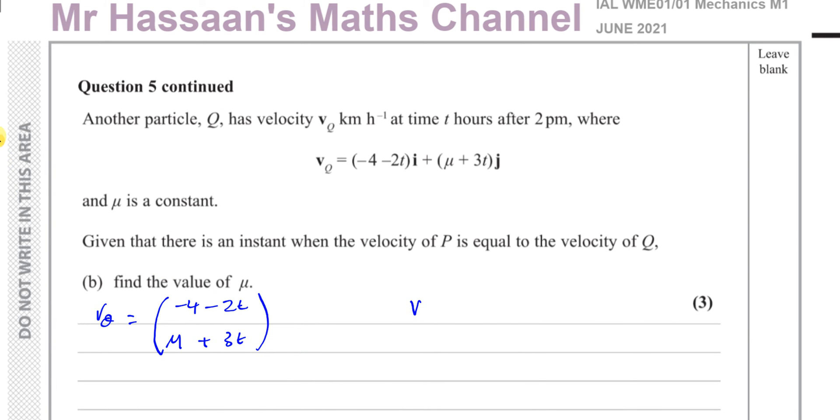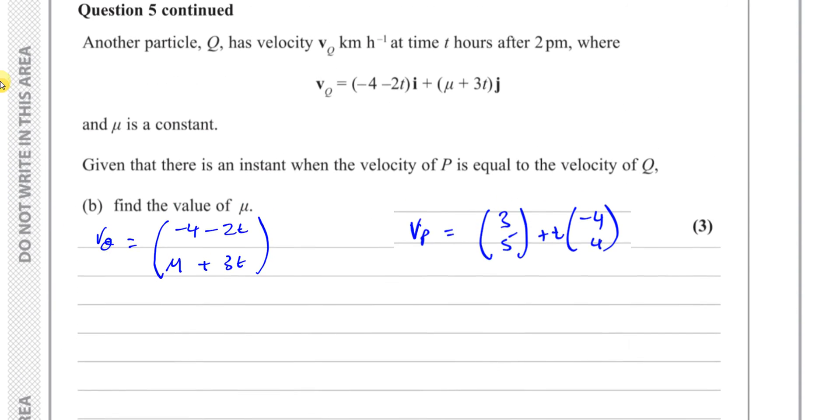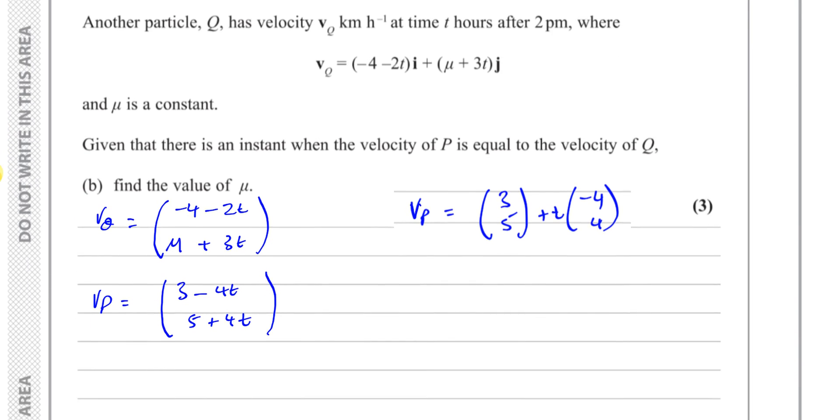The velocity of P, I already have it prepared from the last question. The velocity of P was 3, 5, that was its initial velocity at 2pm, plus minus 4, 4 times t. That was acceleration. I'm going to write this in the same format with the i and j components as one vector. So I'll write this as 3 minus 4t and 5 plus 4t.